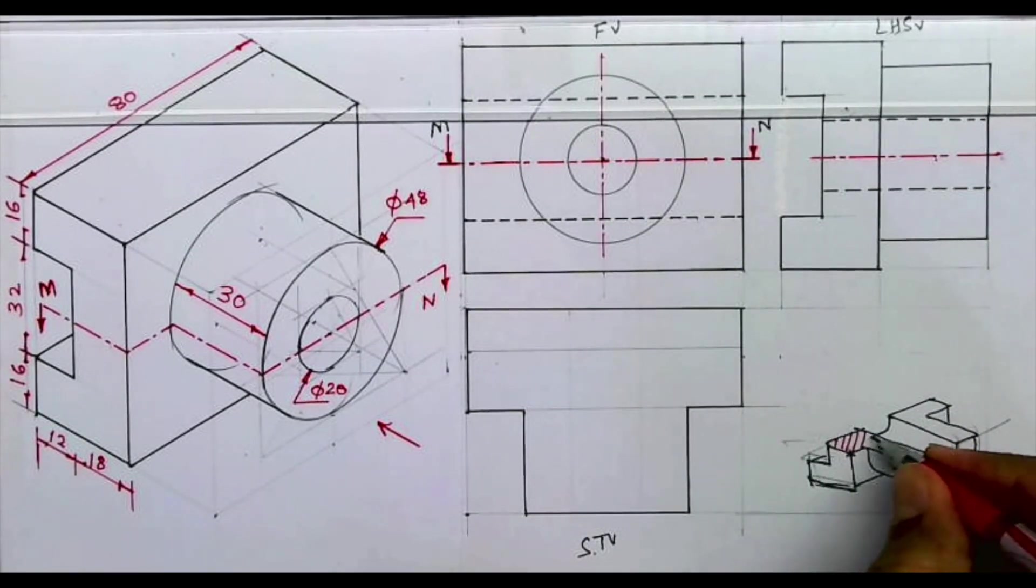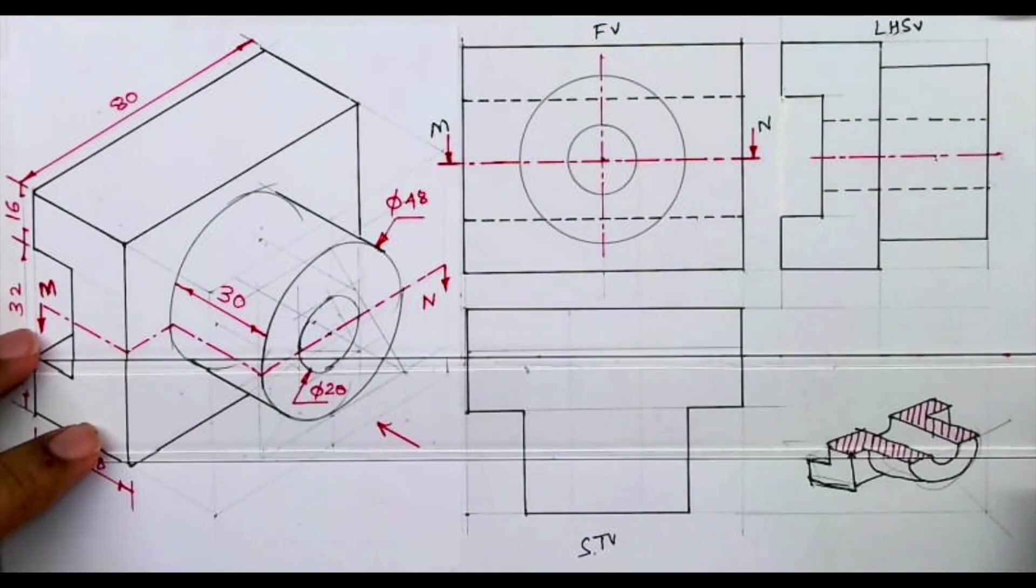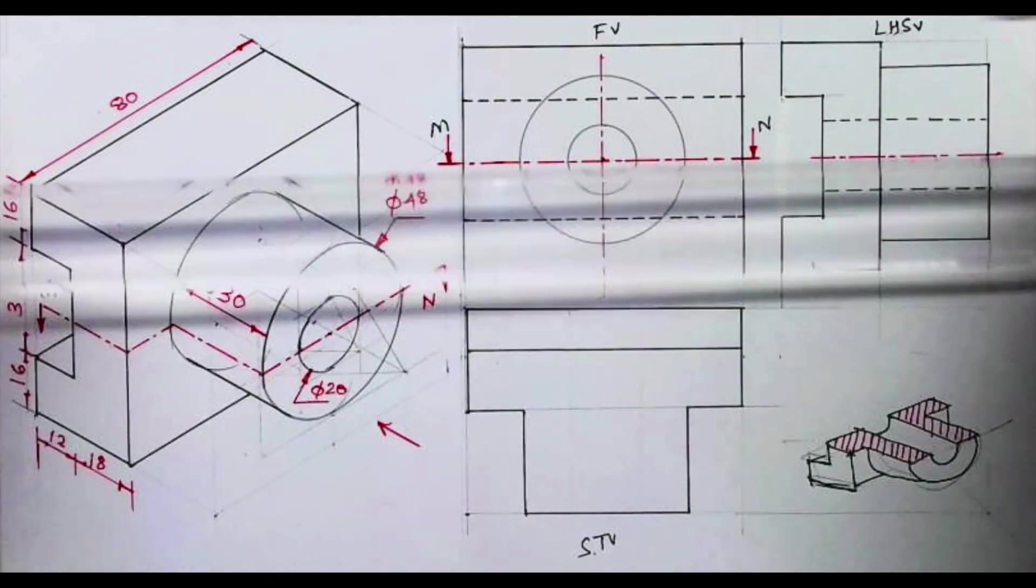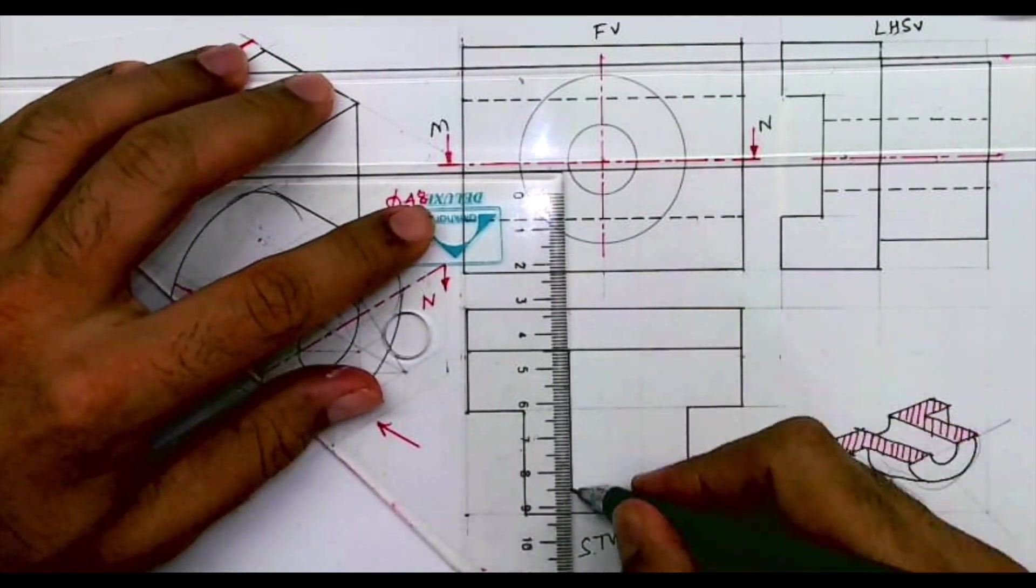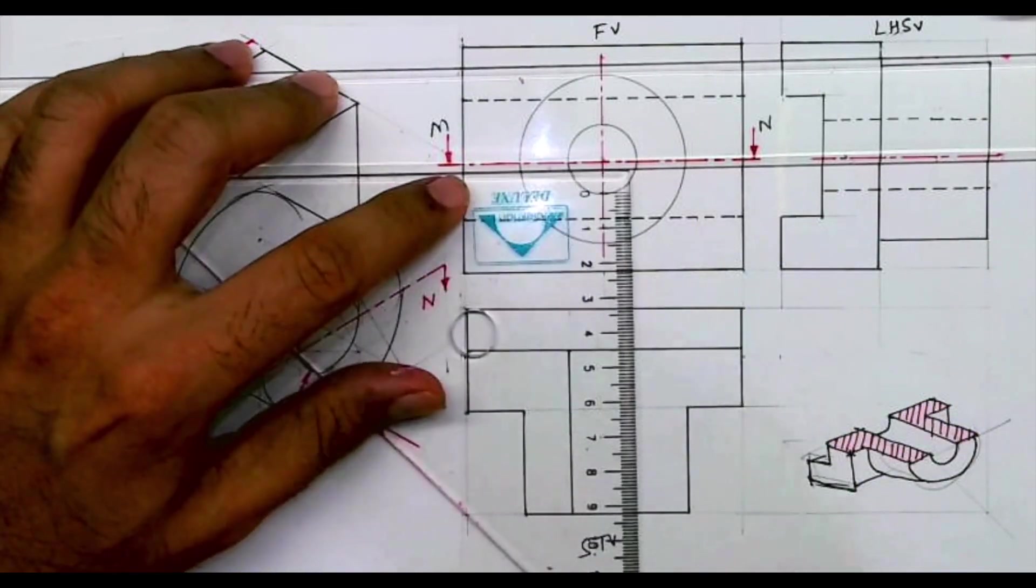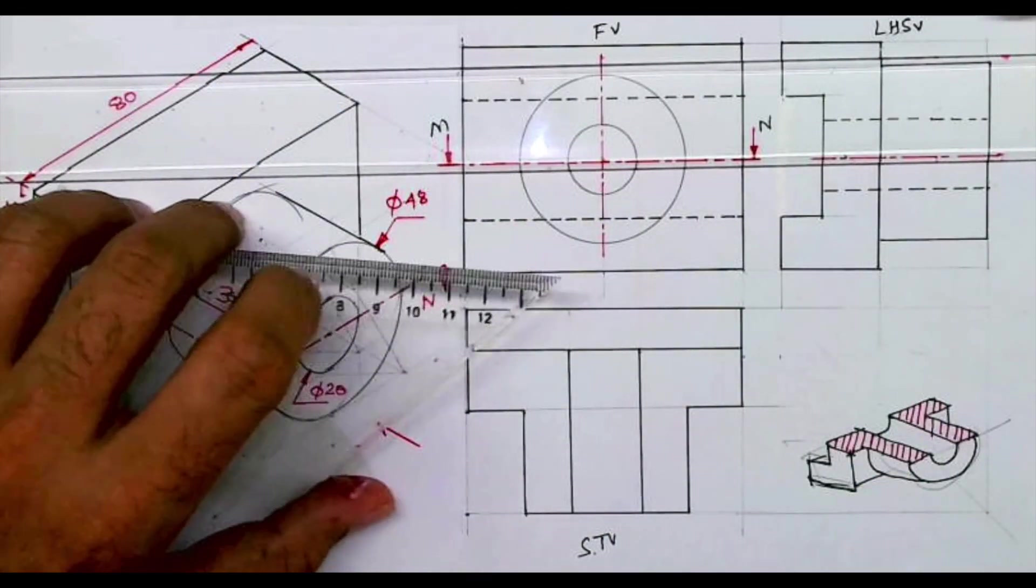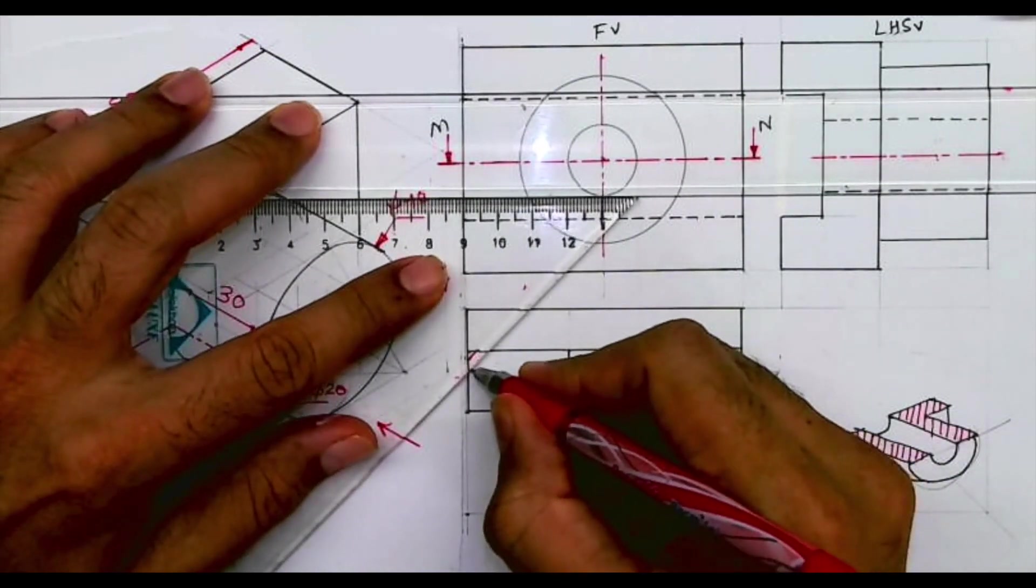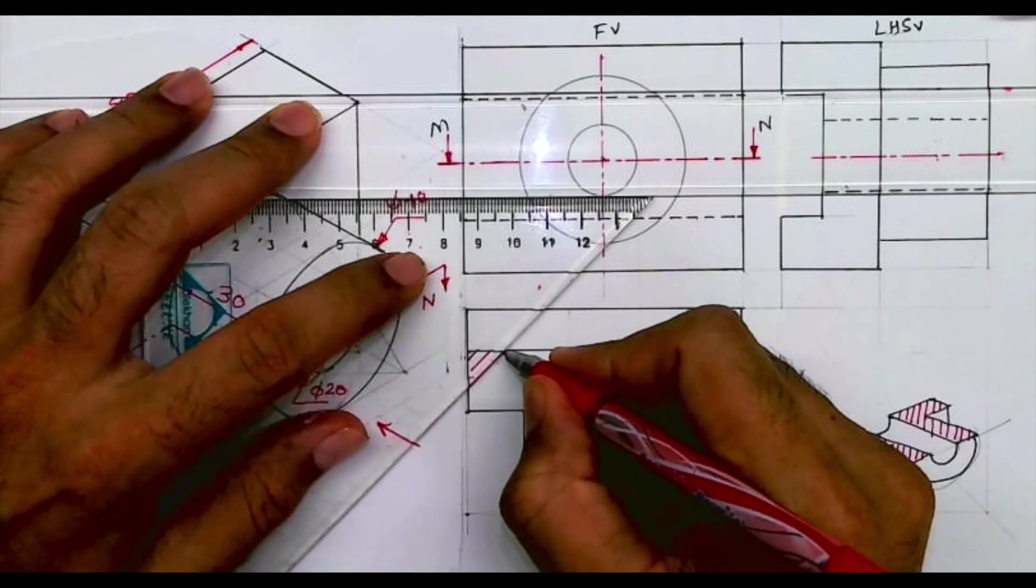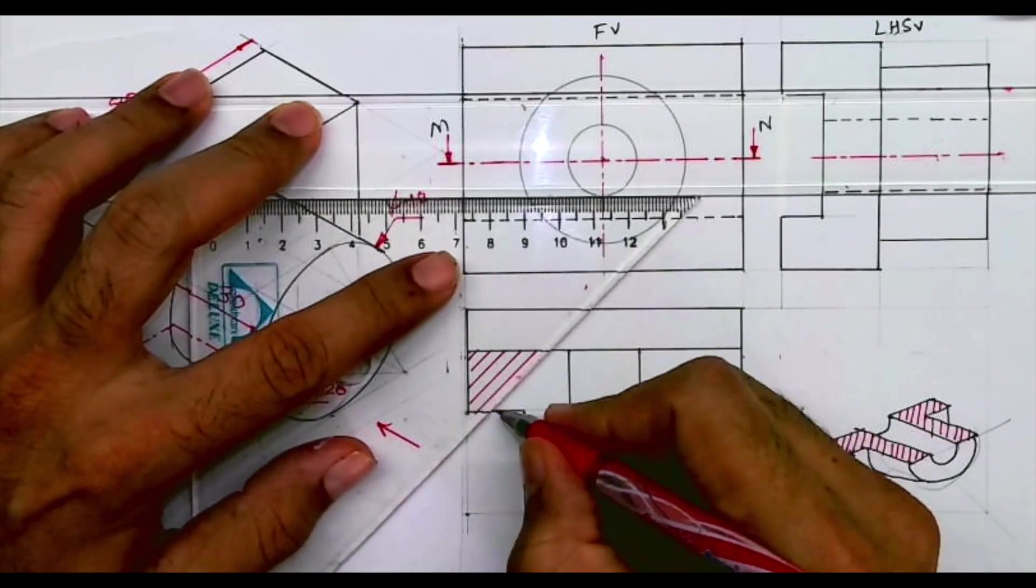And this part will be hatched. And we need to hatch this. So I hope everyone understood how to do sectional top view in this sum. Thank you.